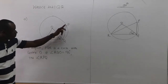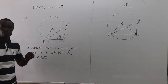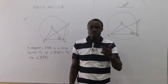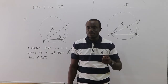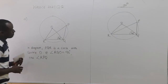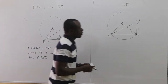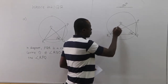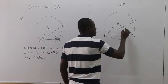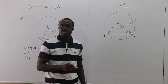We're going to find angle RPQ. We know the center-circumference relationship: the angle a chord makes at the center is twice the angle it makes at the circumference. The center is O, and OR is the same as OQ — both are radii. So ROQ forms an isosceles triangle.